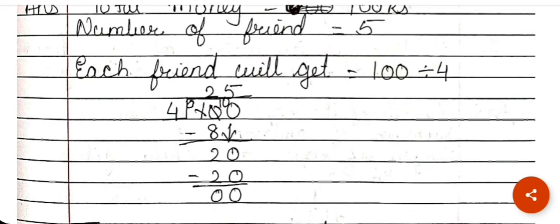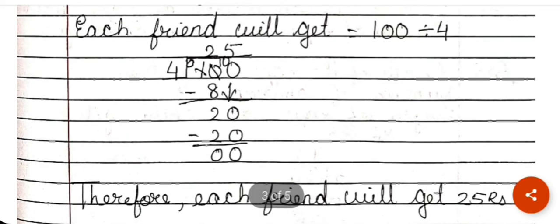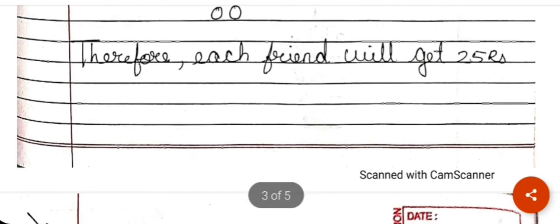Looking at the division of 100 by 5: the first digit is bigger, but checking the table — 5×2=10, which is too big, so we take the closest, 5×1=5 — wait, 12 is bigger so we can't take that. Before 12 in the table is 4×2=8, so we write 8 below, subtract: 0 minus 8 is not possible, so I borrow from 1, making it 10. 10 minus 8 is 2. Bringing down the 0 gives 20. In the table, 4×5=20, so we write 5 and subtract 20. Each friend will get 25 rupees.